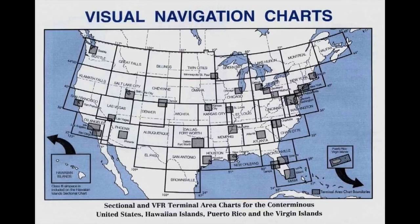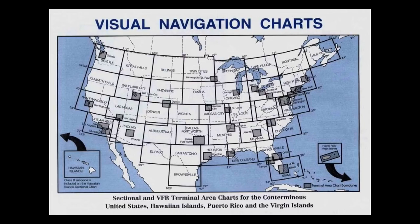Then there are Terminal Area Charts, or TAC, in select areas that are the busiest of the busiest areas. In the Atlanta area, for example, you'll have a Terminal Chart that's twice the scale of a sectional — 1 to 250,000 scale — providing better detail for complex areas. Going the other way is the WAC, or World Aeronautical Chart, at a scale of 1 to 1 million. If you're planning a long trip and want a bird's eye perspective, a WAC is a great thing to use.